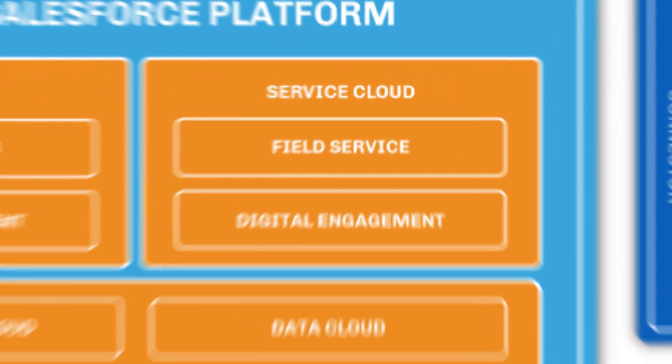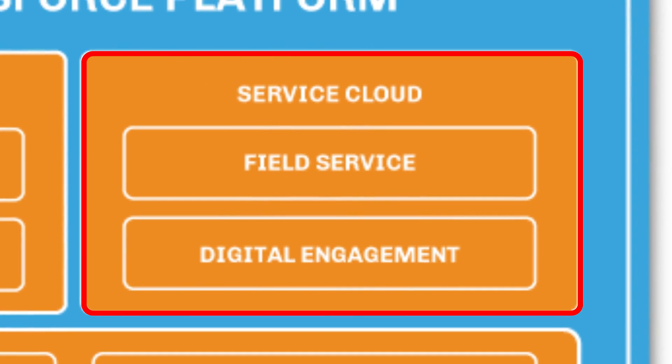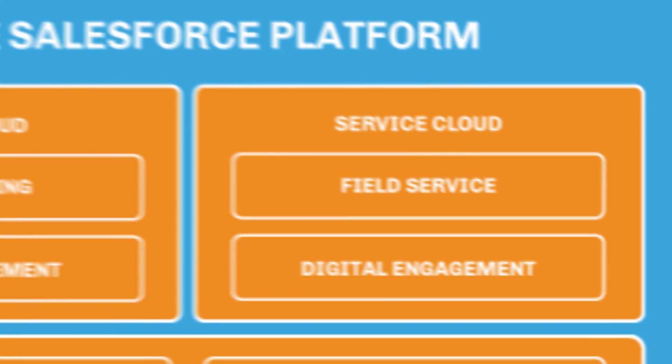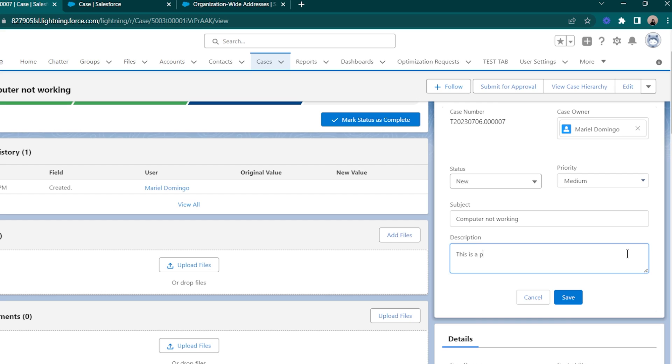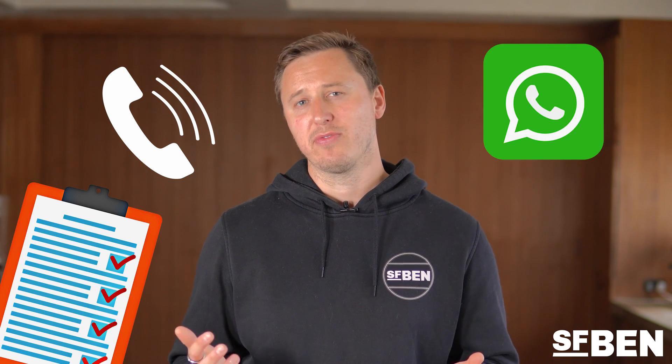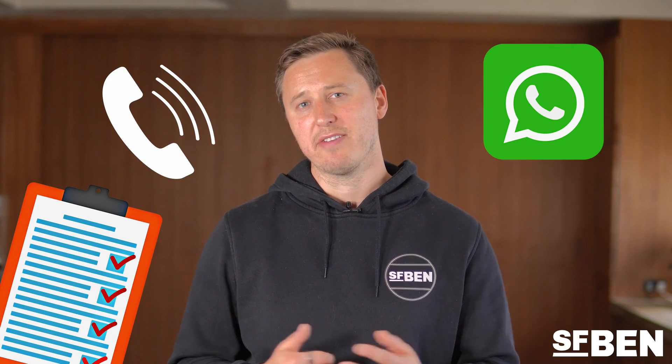Service Cloud is another one of Salesforce's flagship products that sits alongside Sales Cloud to support with customer service. It helps customers get in touch via email support, live chat, and phone, and then supports Service Cloud users in finding and processing a resolution to the customer's issue. Add-on products include telephony integration, WhatsApp integration, Salesforce surveys to gather feedback from customers, and also a knowledge base to help publish help guides.